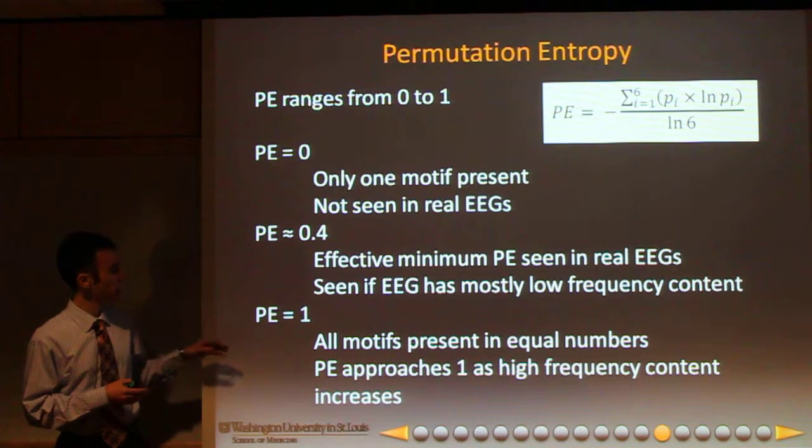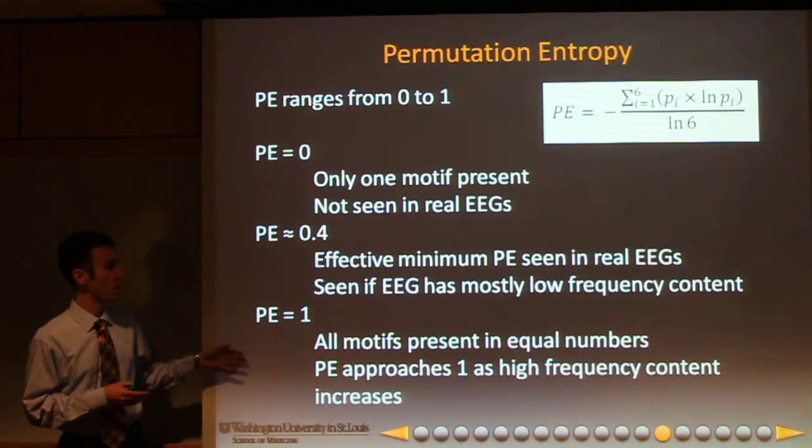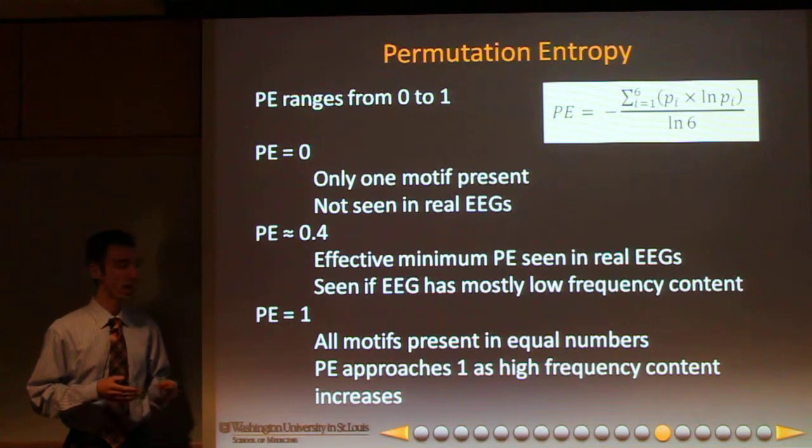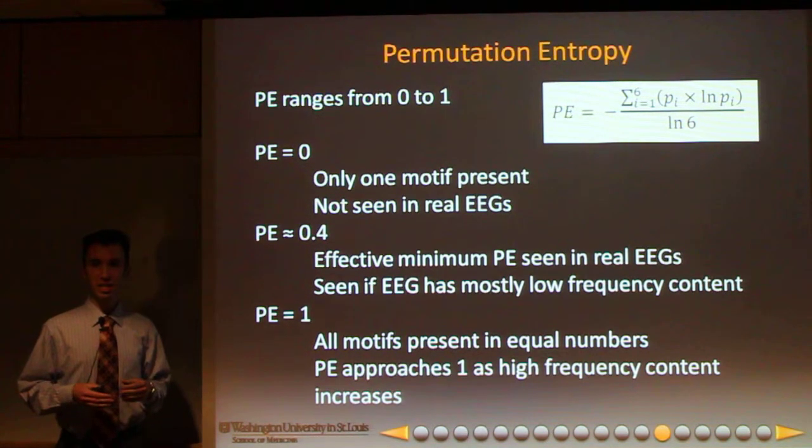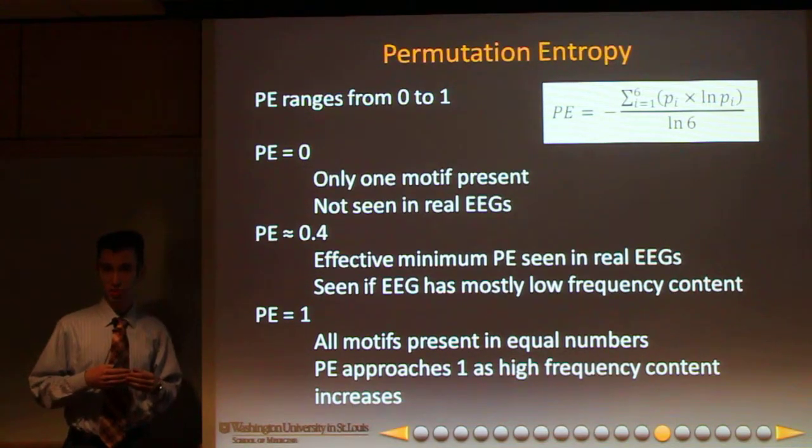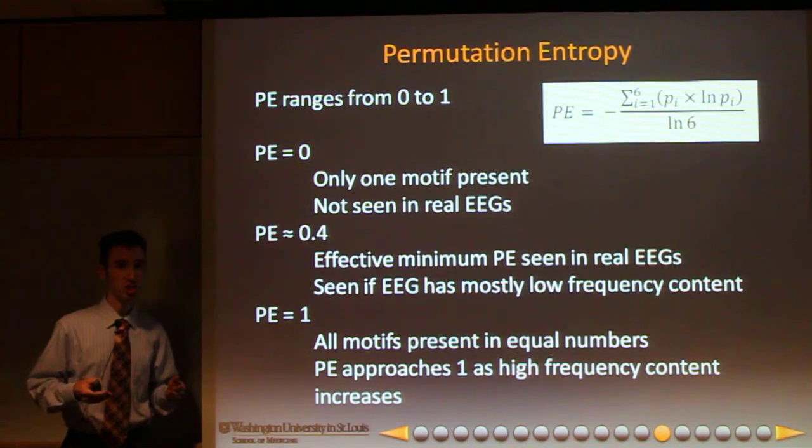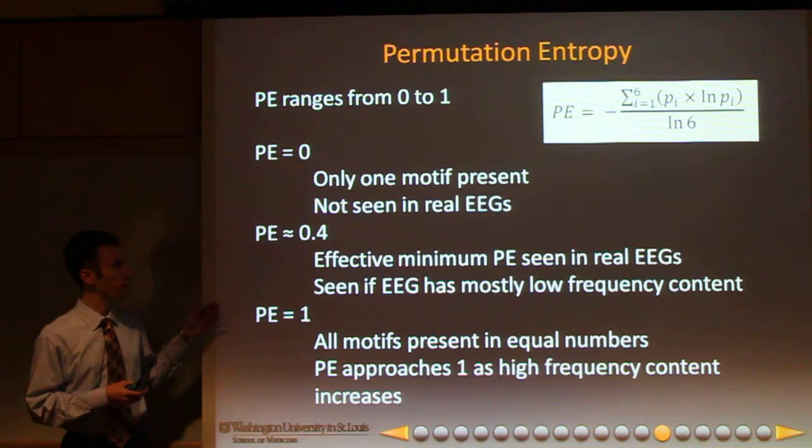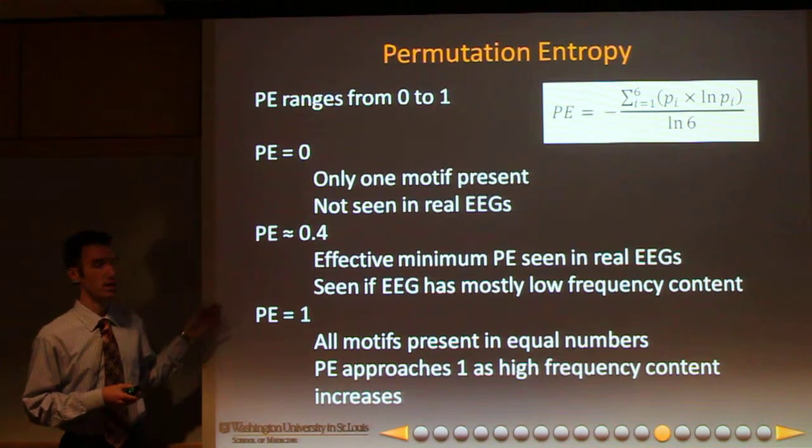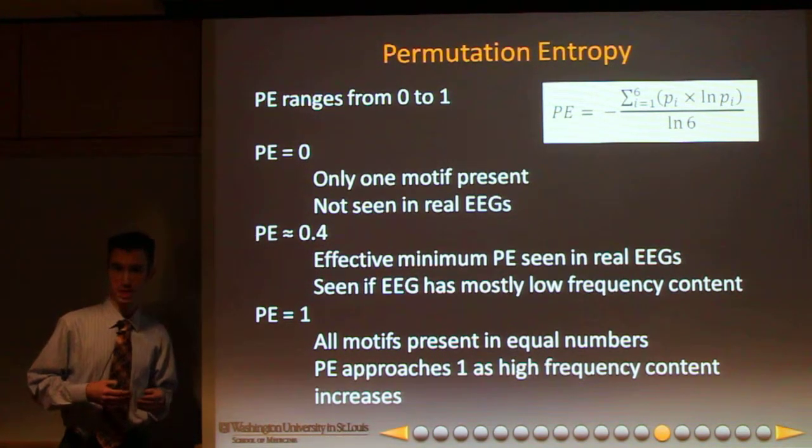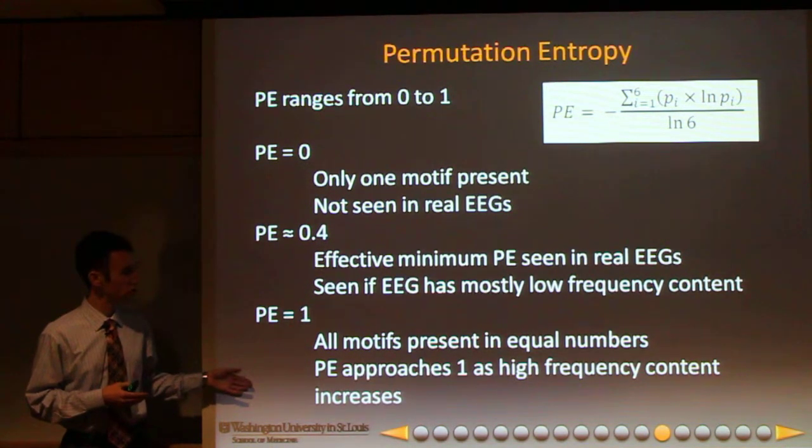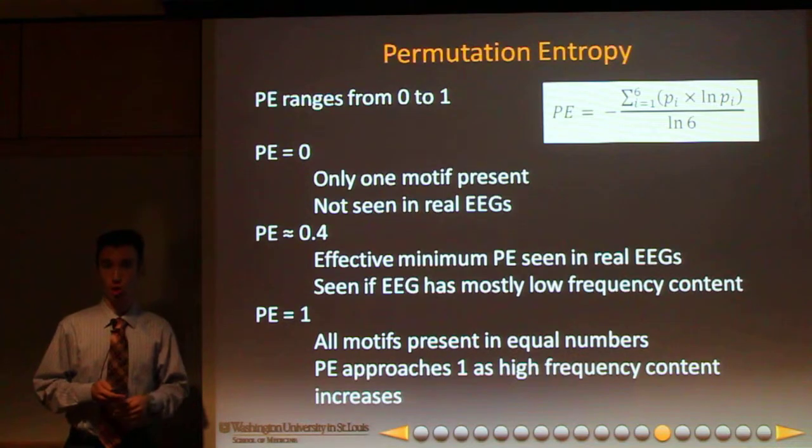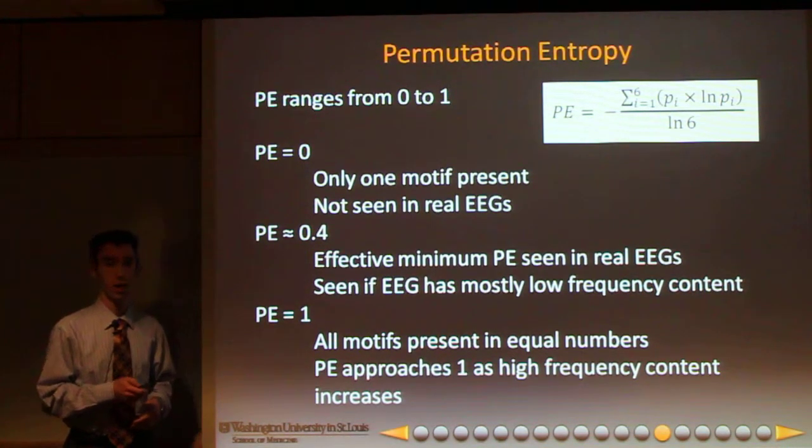An approximate entropy of one represents all motifs being present in equal amounts. The realistic lowest permutation entropy you might see in a real EEG is about 0.4, and that would be if your EEG has mostly low-frequency content. Your permutation entropy can approach one as you have more high-frequency content in your wave.